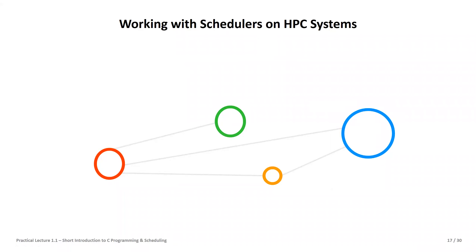Welcome back to High Performance Computing, our practical lecture one — a short introduction to C programming and scheduling. This is the second part. In the first part, we learned how to do a very simple C program — a Hello World program executed on the so-called login node. We will come back to this in the second part. We also learned about the module environment, which is one part of the HPC environment.